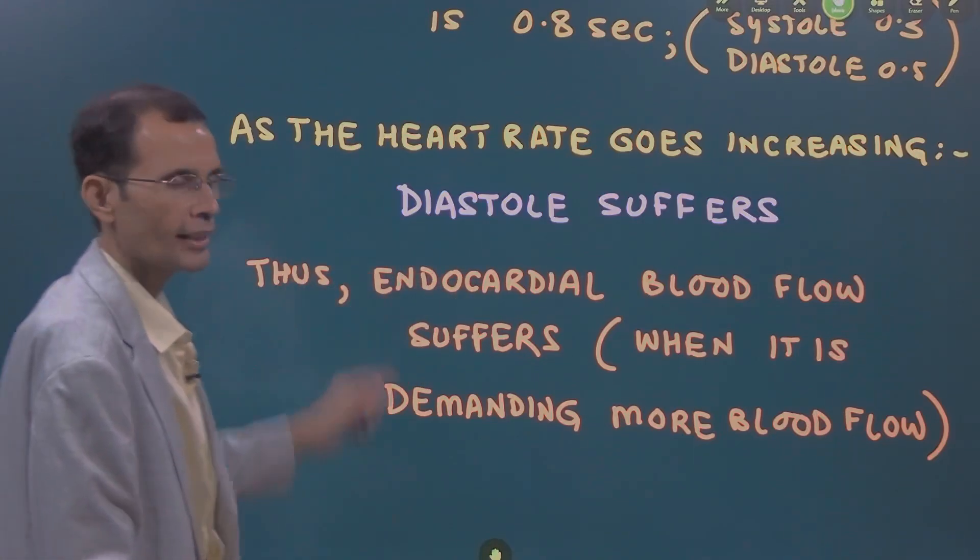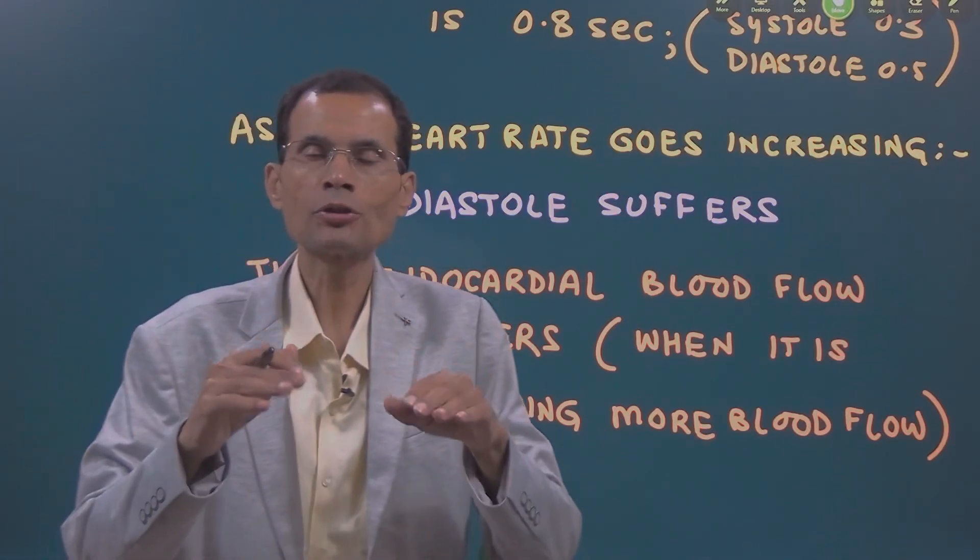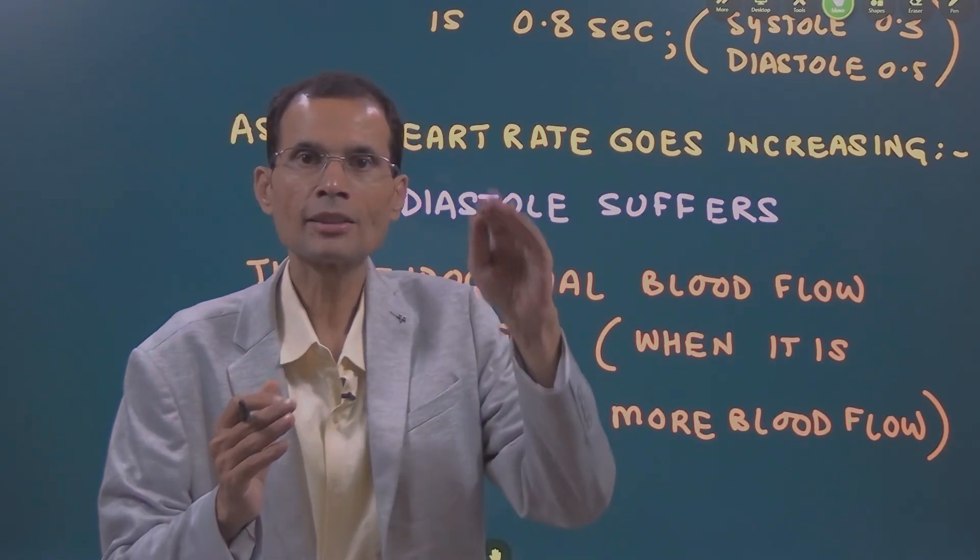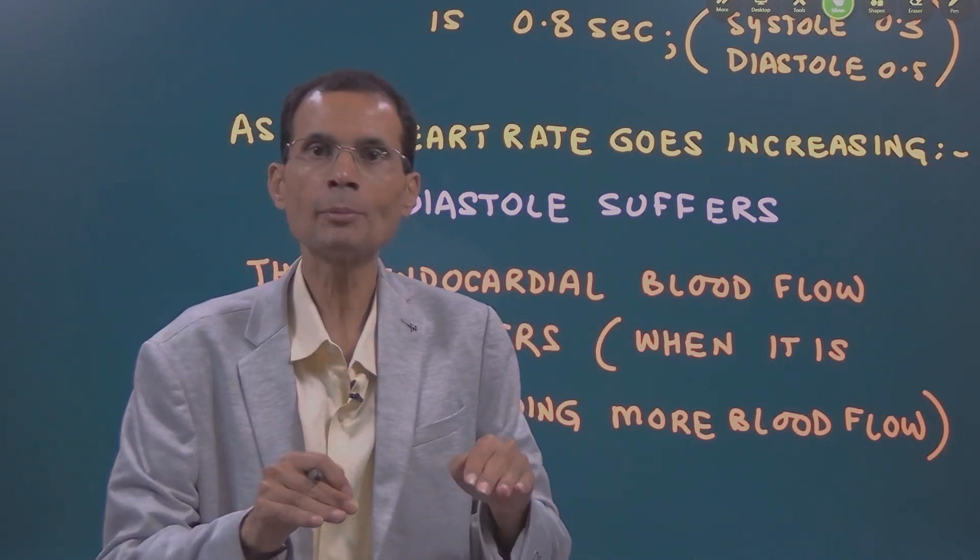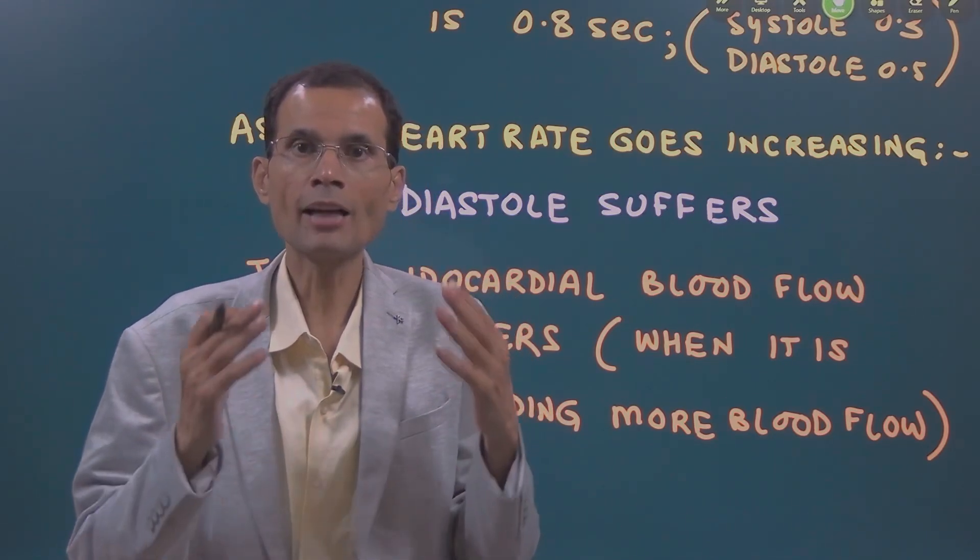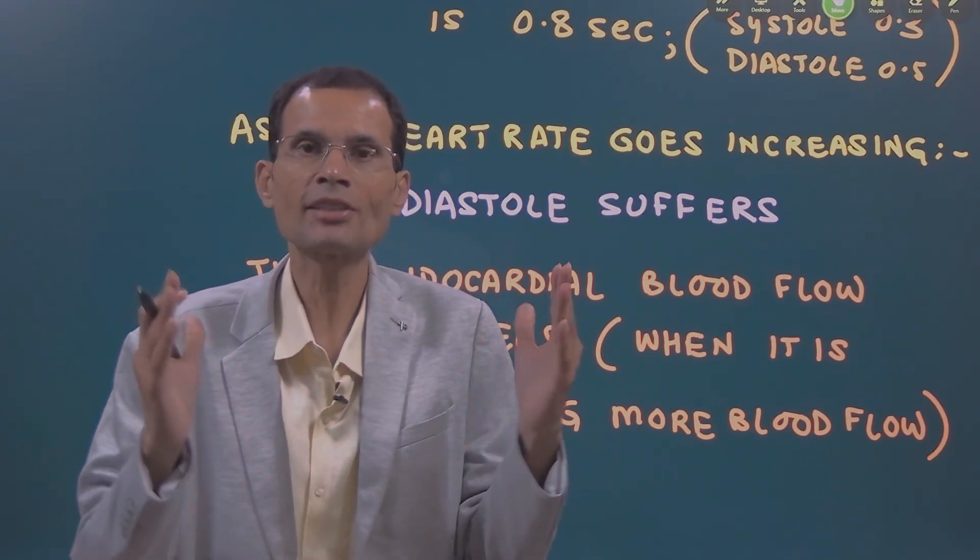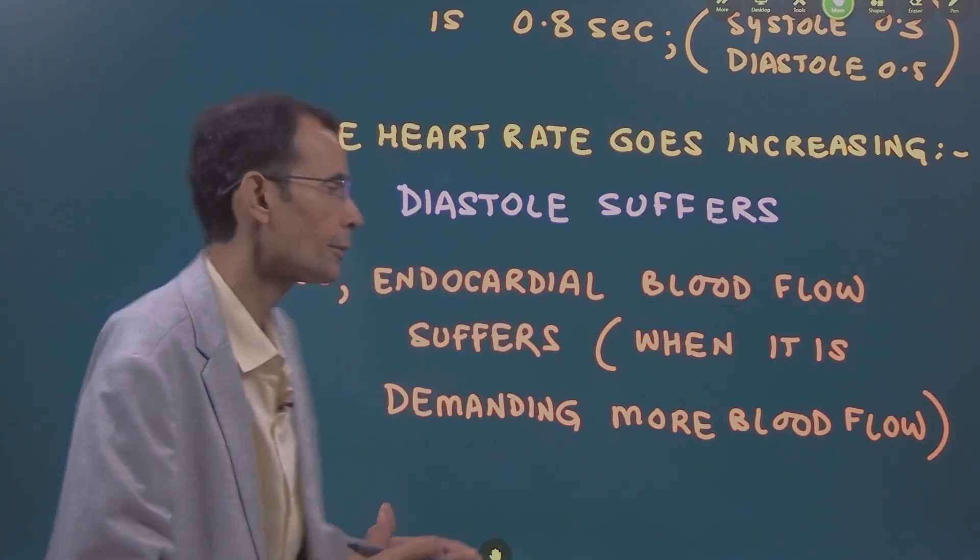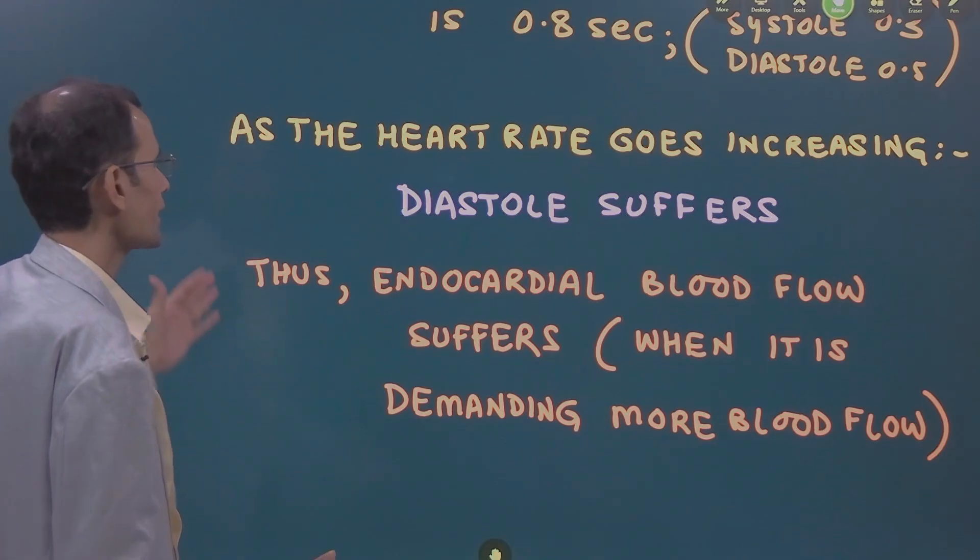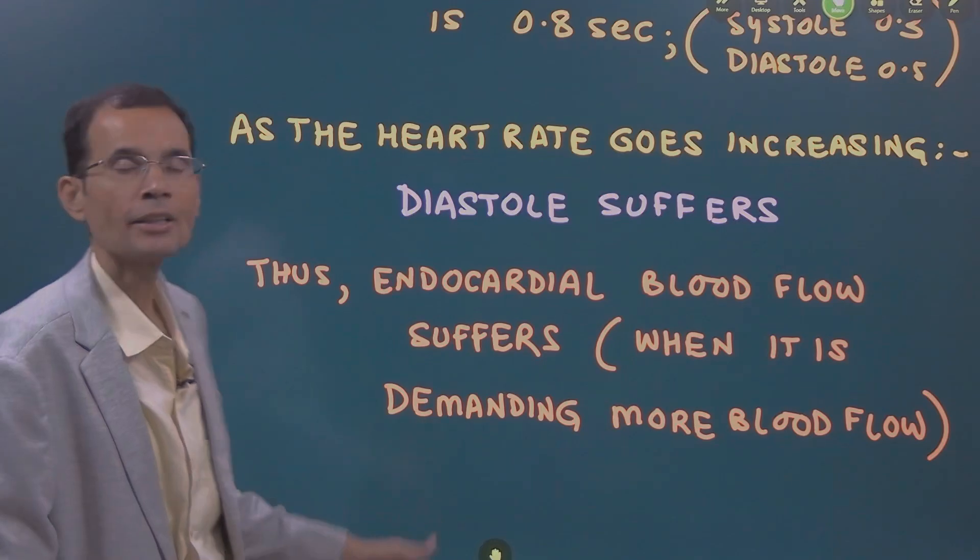And then, as the heart rate goes increasing, of course, cardiac cycle duration will be shorter. That means, systole and diastole, both will be shortened. But diastole suffers more. Diastole time duration is restricted to a greater extent. And since diastole suffers more, it will mean that the endocardial blood flow will suffer at the higher heart rate.